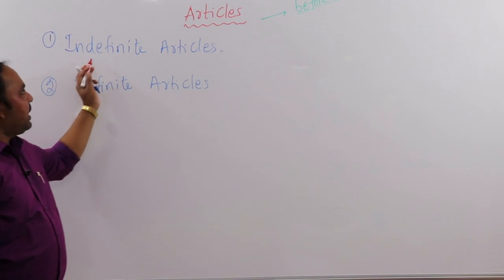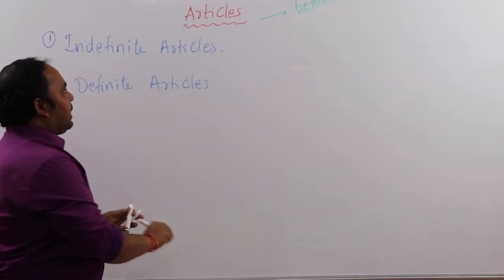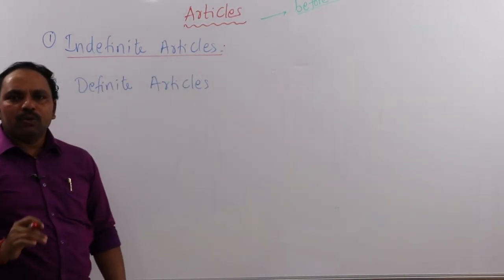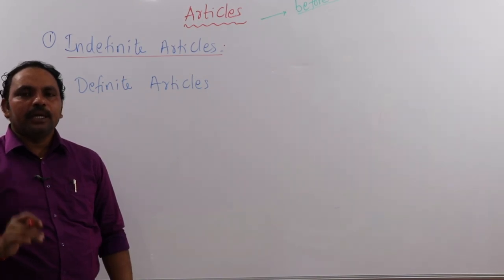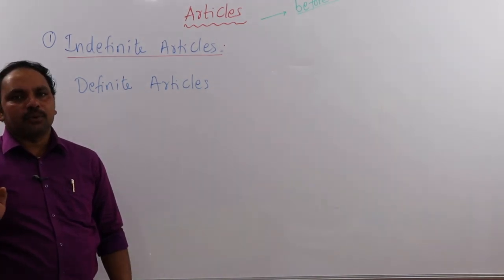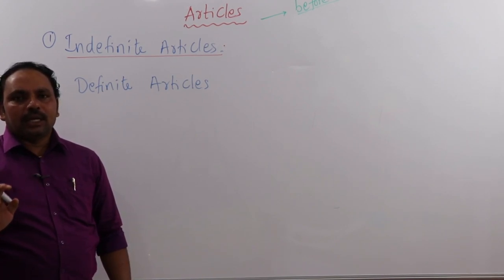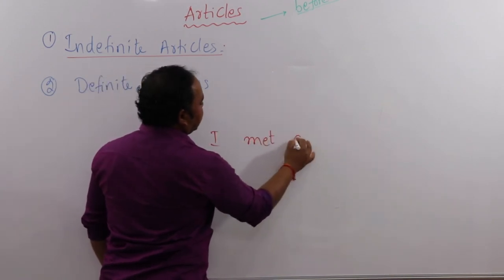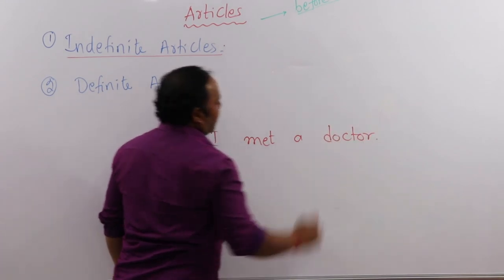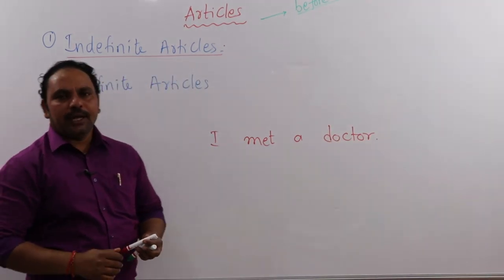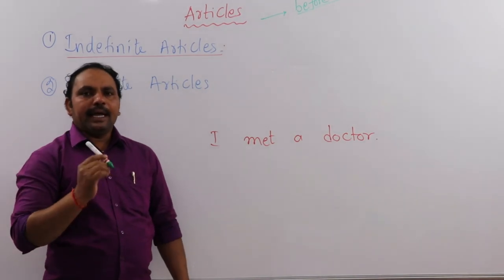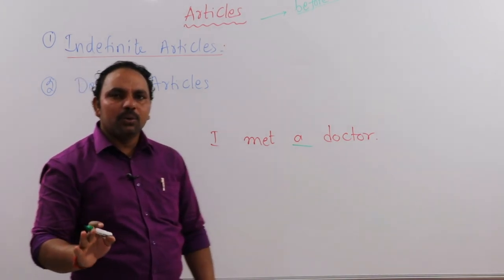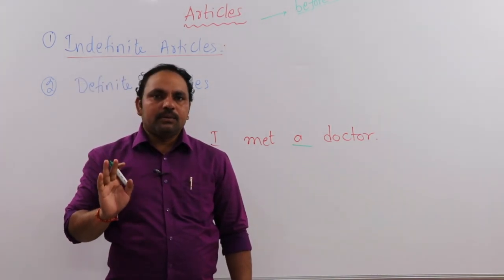There are two types of articles: one is indefinite article. Indefinite articles do not refer to any noun in particular. They don't specify a particular noun. For example, 'I met a doctor.' I met a doctor - meaning I met some doctor, but which doctor exactly is not specified.